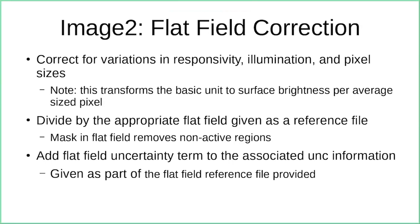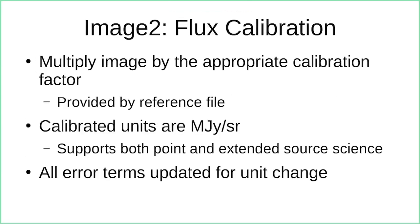Next is the flat field correction, which corrects for variations in responsivity, illumination, and pixel sizes. This effectively transforms the basic unit of measurement to surface brightness per average-sized pixel. It divides by the appropriate flat field from the reference file and flags non-active regions. This is the third uncertainty term we track in the pipeline: the flat field uncertainty term is added to the uncertainty information, so we now have three terms in our uncertainty model plus the total, all of which are propagated through subsequent unit changes.